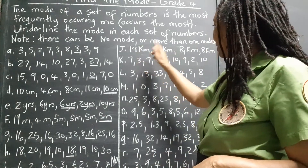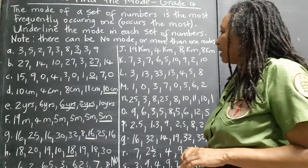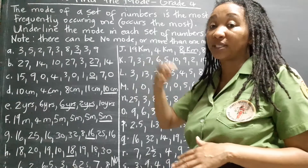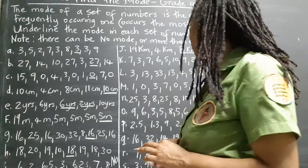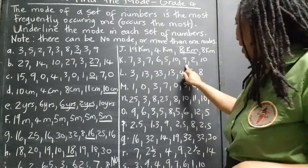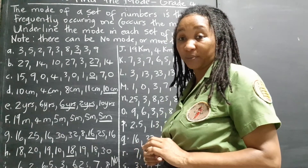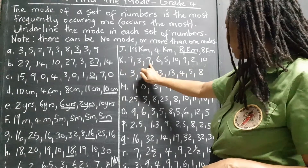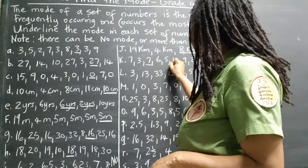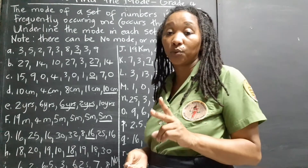Set J: 19 km, 4 km, 8 km, 8 km. Even though there are just two 8-kilometer values, that's still more than the others which appear once, so 8 kilometers is the mode. Set K: 7, 3, 7, 6, 5, 10, 9, 2, 10. I see a tie — two sevens and two tens. So seven and ten are both modes for this set, giving us two modes.